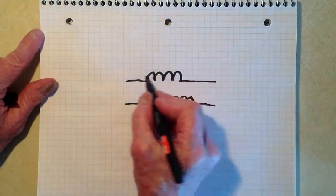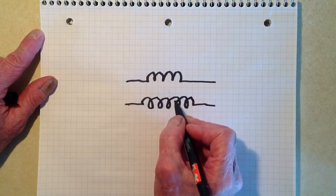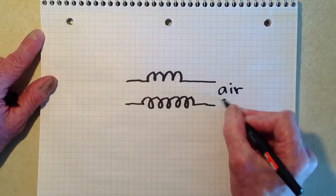Well, here's the deal. If you see an inductor symbol like either one of these, and there's no lines whatsoever, it's an air core inductor.